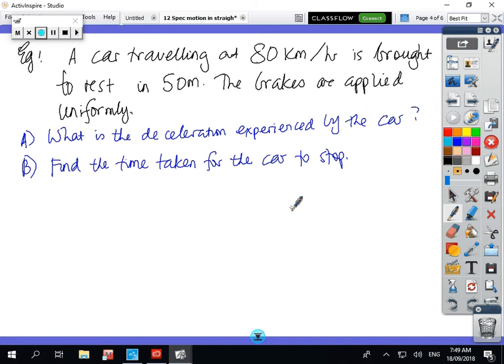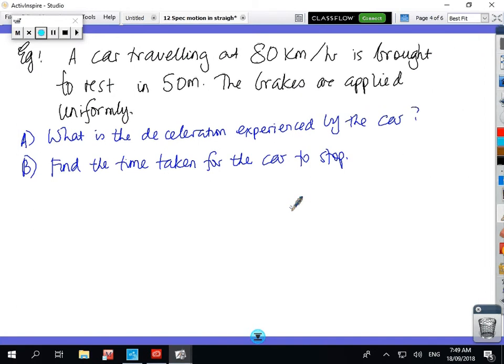Okay, so a car travelling at 80k is brought to rest in 50 metres, the brakes are applied uniformly, what's the deceleration experienced by the car, and find the time taken for the car to stop. Okay, so we've got speed, kilometres per hour, but then we've got distance in metres, so we've got to convert.